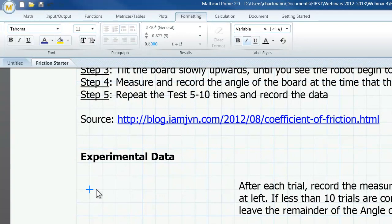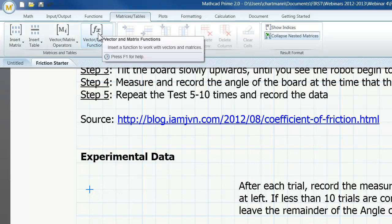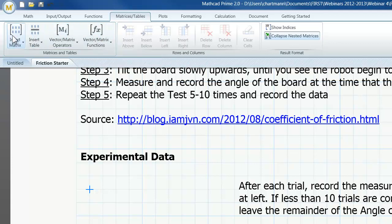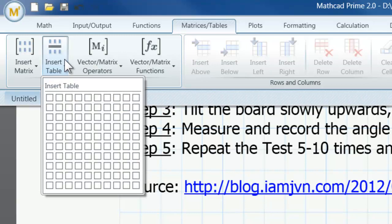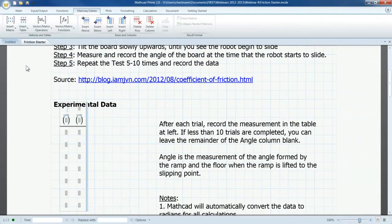To insert a table into the worksheet, I will place the insertion cursor beneath the label for experimental data. Then, I will click on the Matrices Tables tab. On the left edge of the ribbon, I find the icons for Insert Matrix and Insert Table. When I left-click on Insert Table, a sizing array appears. Dragging my mouse into the array makes it easy to insert a table. Once I identify a correctly sized table, I left-click to insert a table into my MathCAD worksheet. In this case, I will insert a 7 by 2 table.